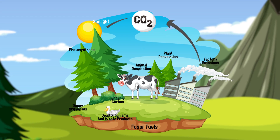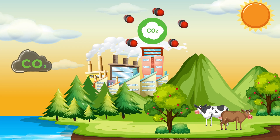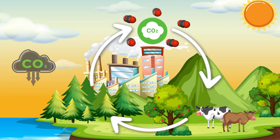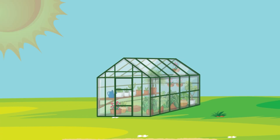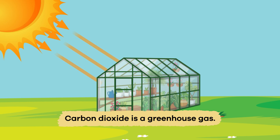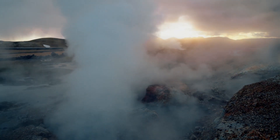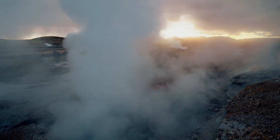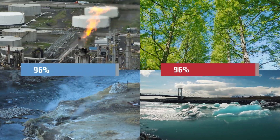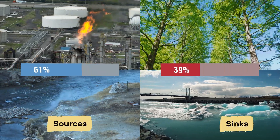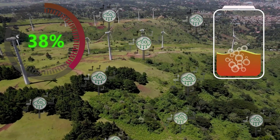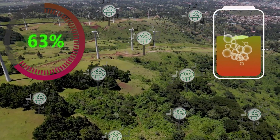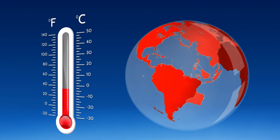Remember, this cycle is continuous and there is no specific order to the steps. Here are a few other important facts you should know. Carbon dioxide is a greenhouse gas — it traps heat in the atmosphere, and without it the earth would be too cold to be livable. Right now, there is an imbalance between the sources and sinks of carbon. There is too much carbon being released into the atmosphere and not enough being absorbed.